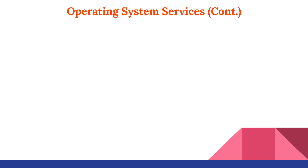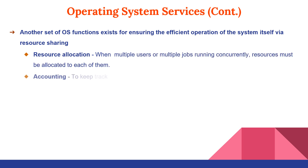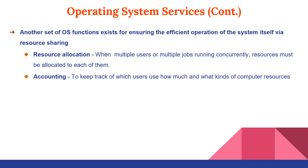Another set of OS functions exists for ensuring the efficient operation of the system itself via resource sharing. Resource allocation: when multiple users or multiple jobs run concurrently, resources must be allocated to each of them. Many types of resources — such as CPU cycles, main memory, and file storage — may have special allocation codes, while others such as I/O devices may have general request and release codes. The OS also keeps track of which user uses how much and what kind of computer resources.